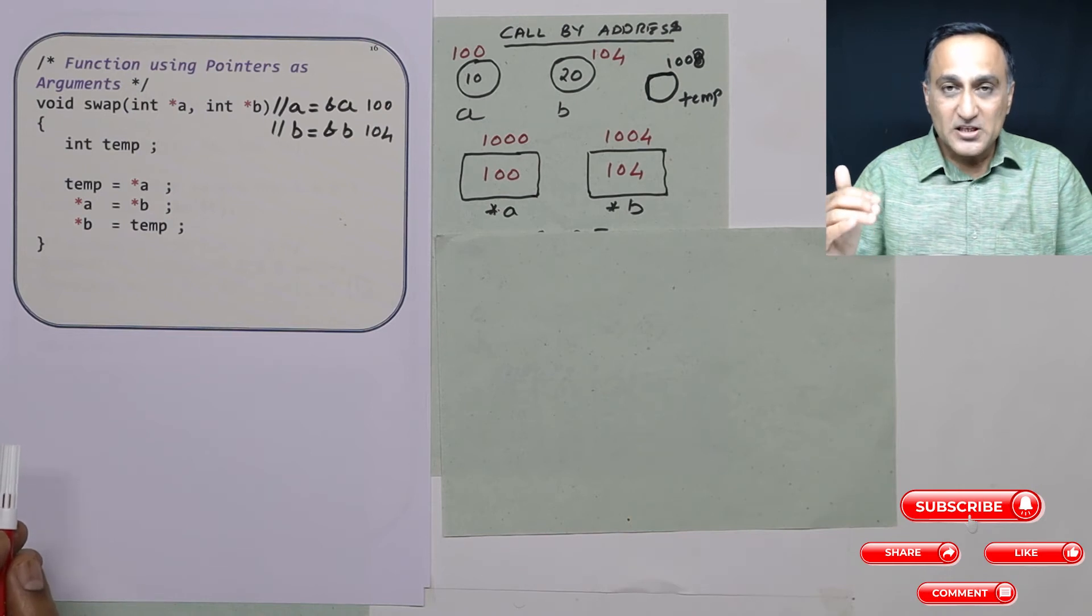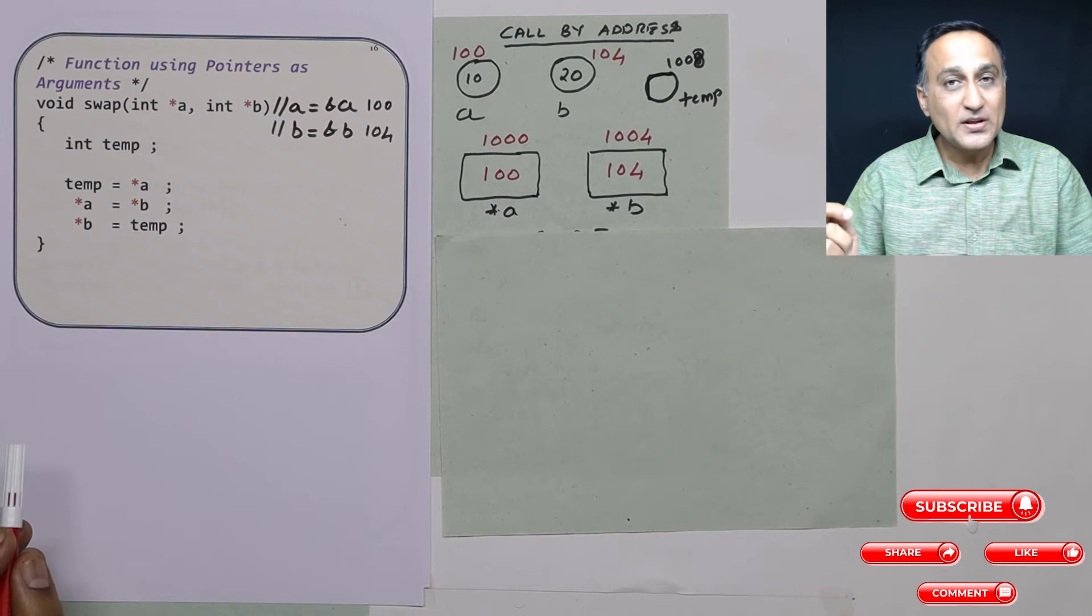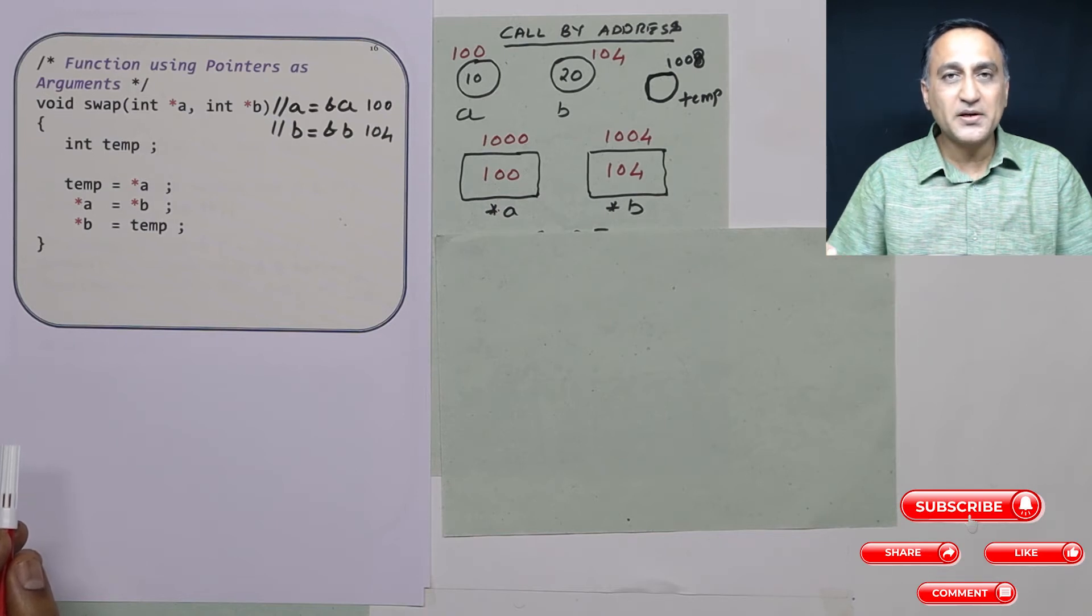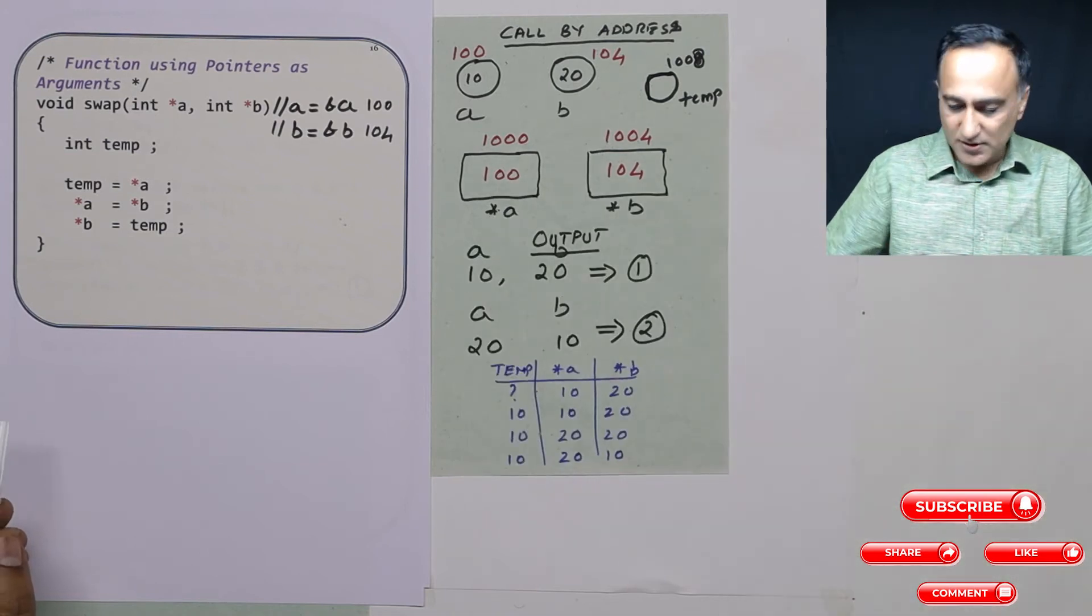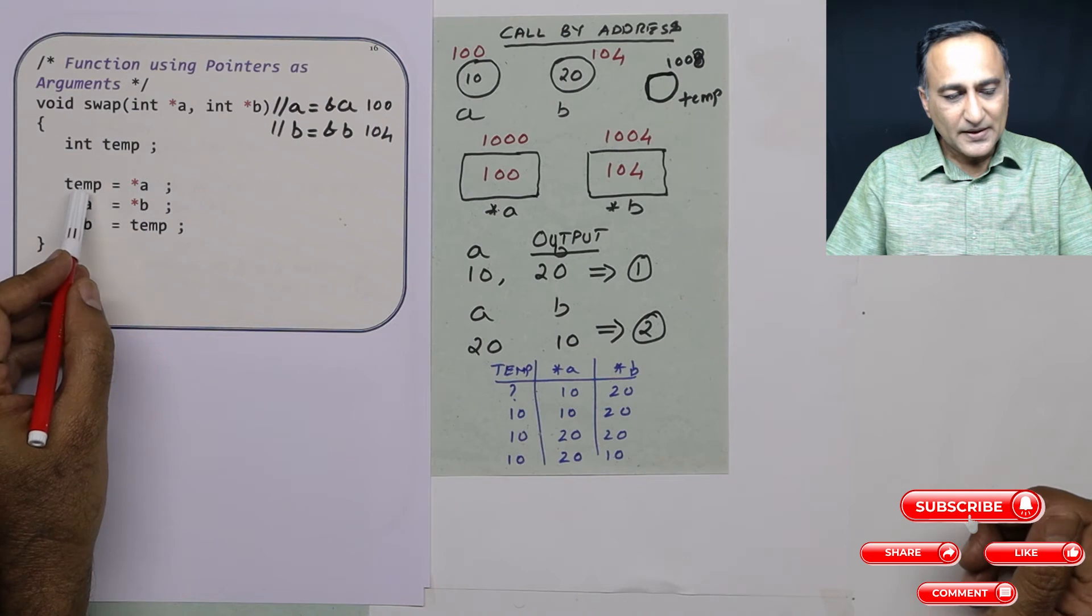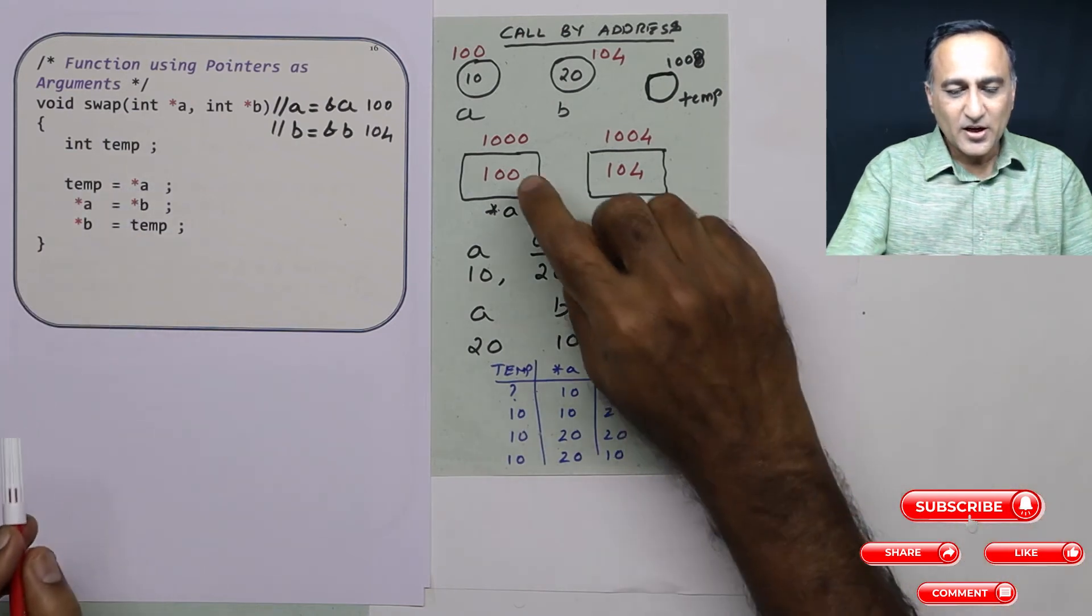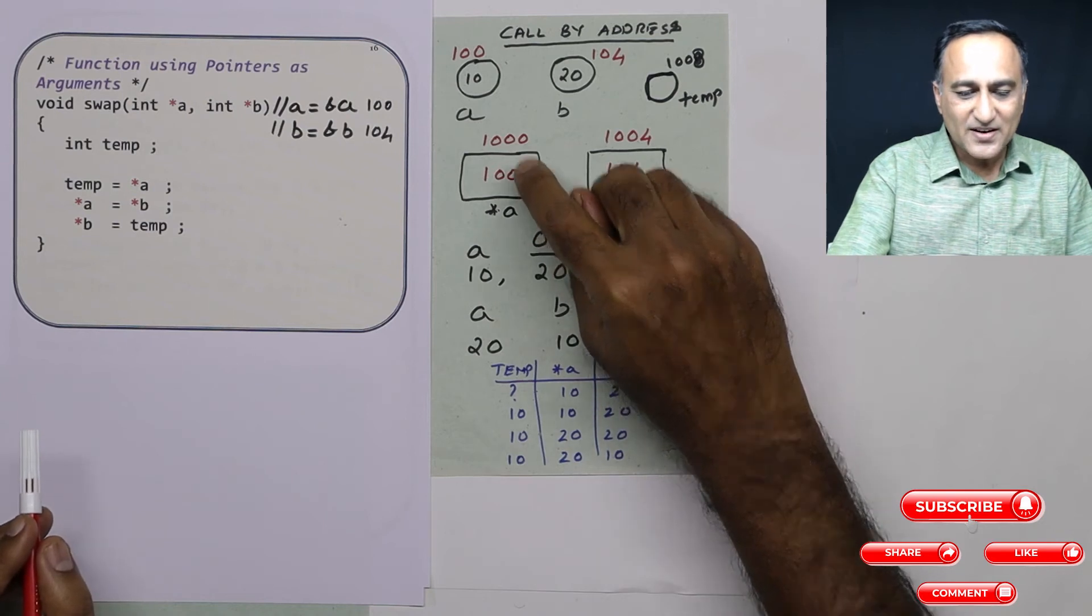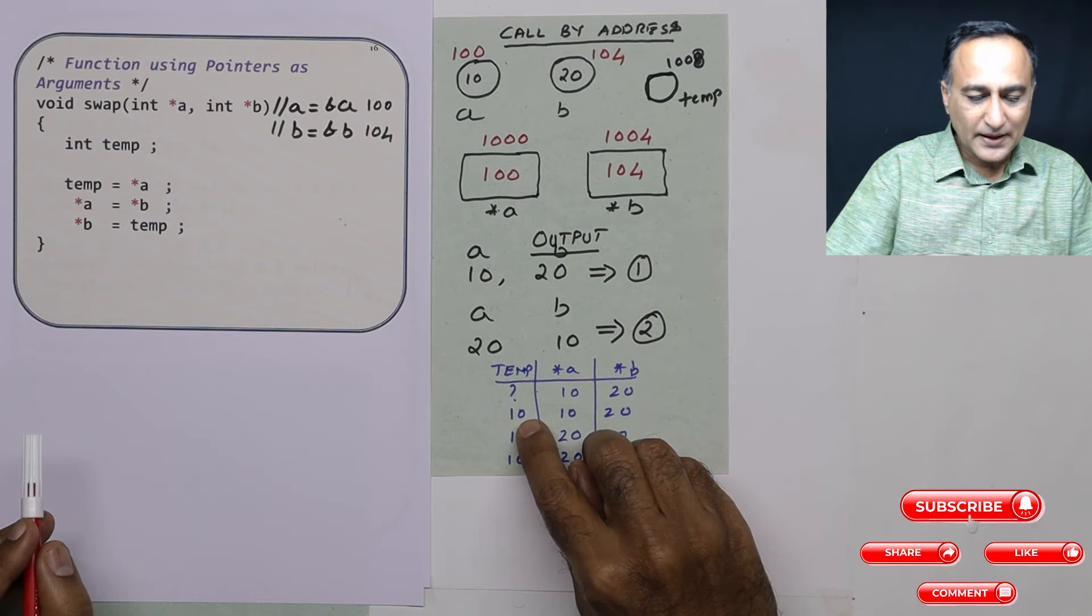Now these pointer type variables have access to your address, so they can change values at that particular address. So what they're doing here, as you can notice, I have declared a local variable called temp. Temp is star a. A is the address, star a is value at address a. What is the value at address 100? It is 10. So temp takes the value 10.